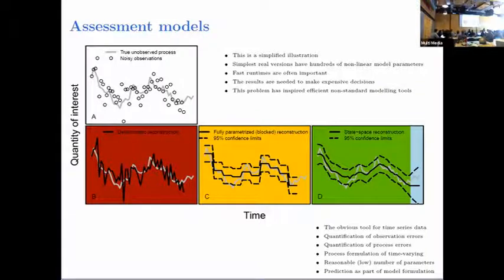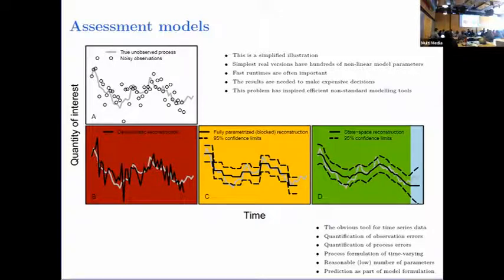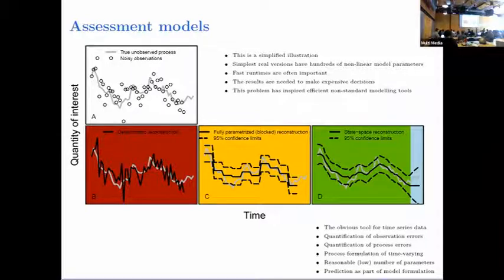The second category — the yellow line — is what I call a fully parameterized reconstruction. There we have to specify, through fixed-effects model parameters, a flexible structure that is flexible enough to capture the process we're estimating, but with few enough parameters that we can actually estimate it. That's a balancing act. In this case the model is constant in blocks of two, but it could equally be a spline with fixed nodes or a mean value plus some penalized deviations.